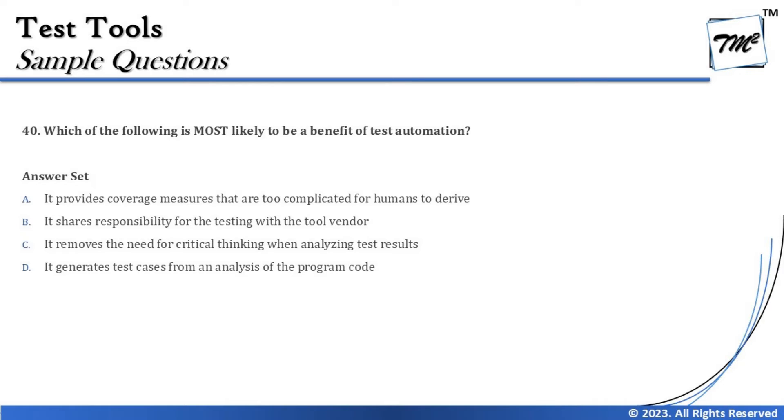Option A says it provides coverage measures that are too complicated for humans to derive. The reason we have tools is to minimize our efforts and increase our effectiveness and efficiency. Calculating coverage is done with coverage measurement tools, and test execution tools have built-in features to do this job for us. This option is seen as one of the benefits of having a test automation tool.